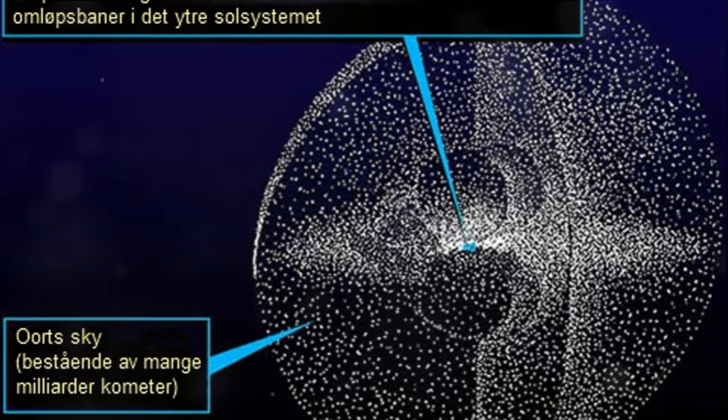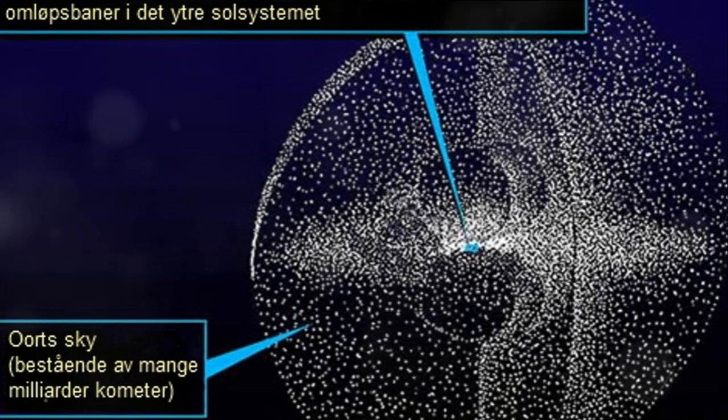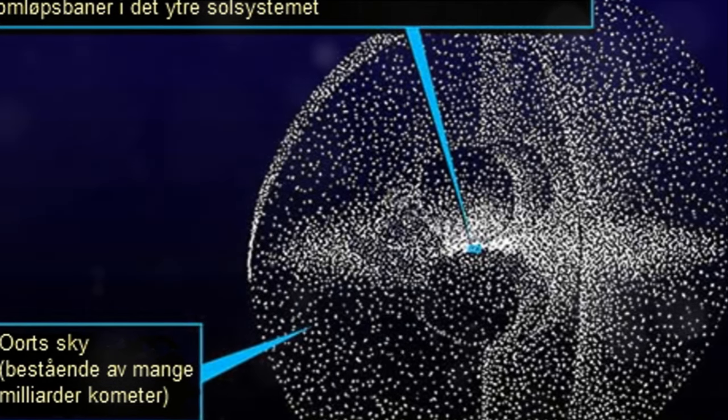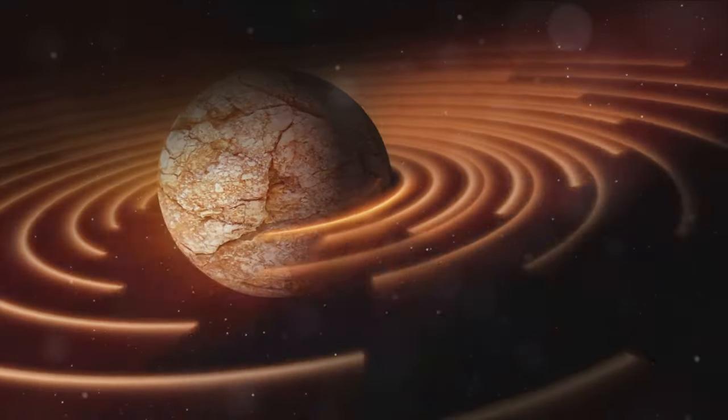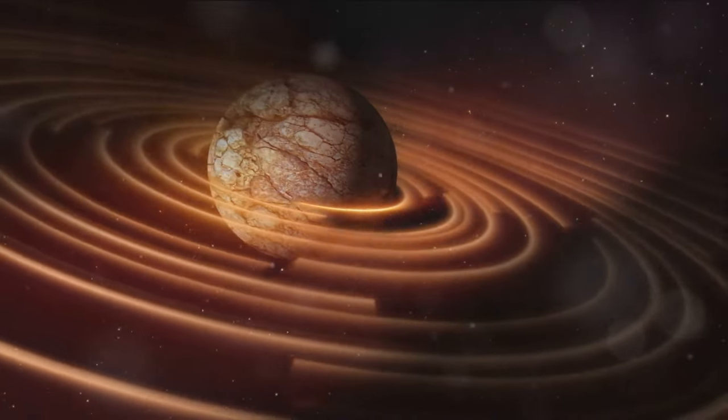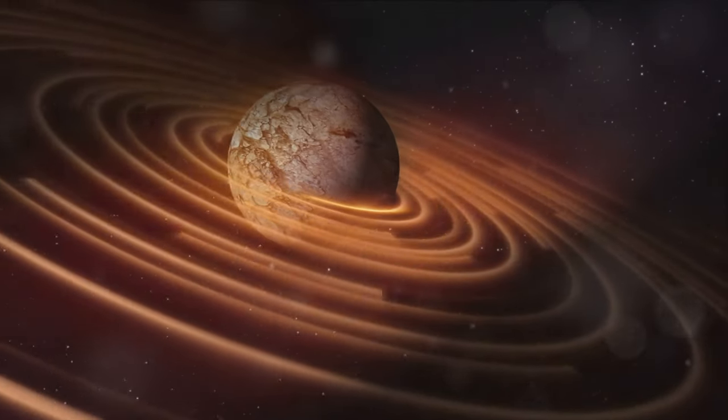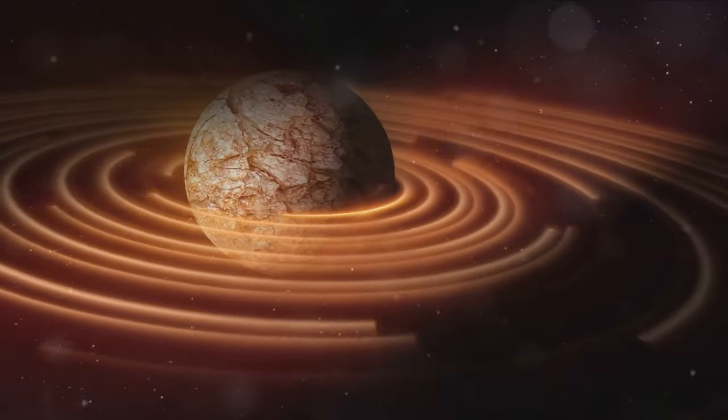It wasn't until 1943 that Kenneth Edgeworth proposed the existence of a vast reservoir of icy bodies beyond Neptune. This theory was further refined in 1951 by Gerard Kuiper who predicted a belt of icy objects beyond Neptune's orbit. These early ideas laid the groundwork for future discoveries.